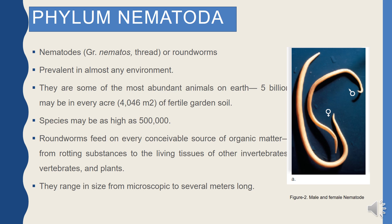Nematodes — the name comes from a Greek word meaning thread-like. We also call them round worms because if you make a cross section of their body it is round. Their speciality is that they are prevalent in almost every environment — found in frozen Arctic ice, high-sulphide marine environments, rotting apples, and the guts of invertebrates.